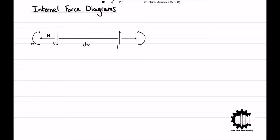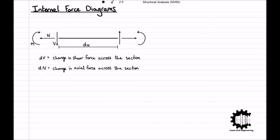Using dV to denote the change in shear force across the section, dN to denote the change in axial force, and dM to denote the change in bending moment, we can denote the internal forces at the right end of the section accordingly.